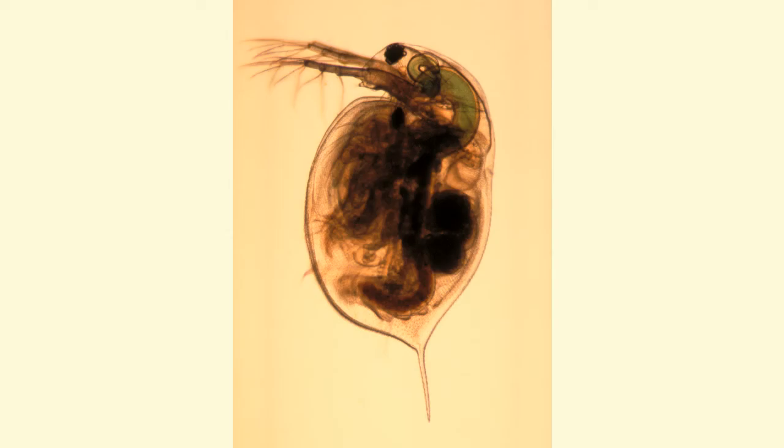These are called zooplankton. These are tiny, free-floating animals. Plankton have a high nutritional content and make up most of the living stuff in a pond. Zooplankton eat phytoplankton, and many species eat each other.